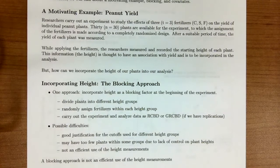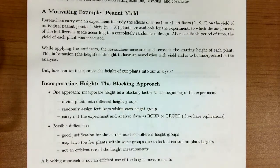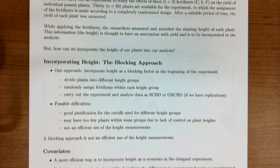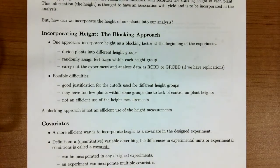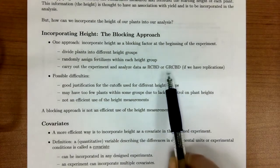Up until this point, we would probably try to treat height as a blocking factor, in which we would maybe try to divide the plants up based on height groups and then randomly assign the fertilizer within the height groups — similar to carrying out a randomized complete block design or a generalized randomized complete block design.